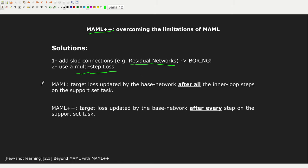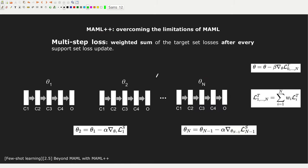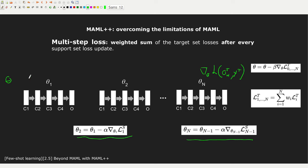There is another approach that the authors use, and this is the multi-step loss. In MAML, we update the base network after all the inner loop steps on the target loss. What the authors of MAML++ propose is to update the base network after every step on the support set task. So suppose we have our base network theta. We get theta 1 as usual, theta 2, and up to theta N. What MAML does is estimate the loss using the output on the target set at step N, comparing it with the labels on the target set.